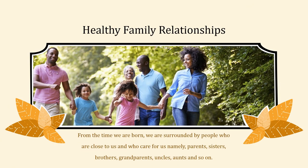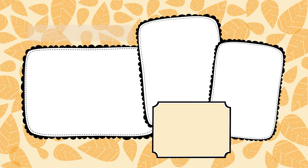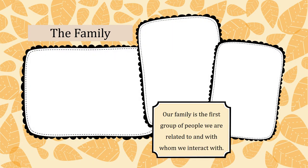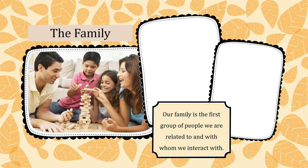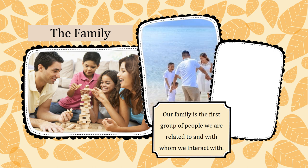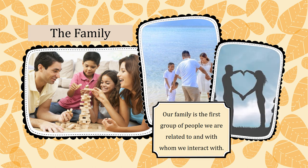From the time we are born, we are surrounded by people who are close to us and who care for us — namely, our parents, sisters, brothers, grandparents, uncles, aunts and so on. Our family is the first group of people we are related to and with whom we interact.